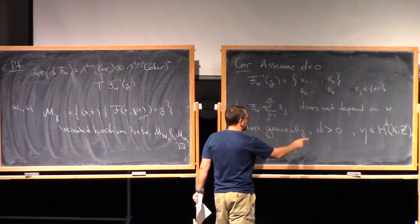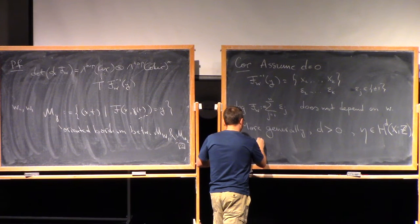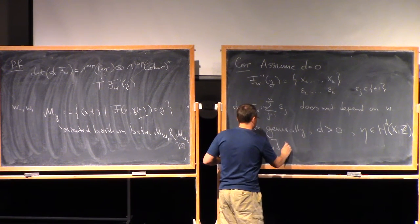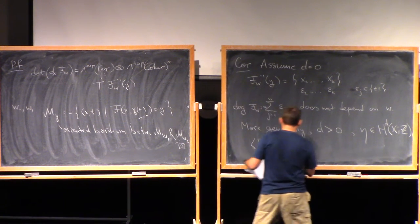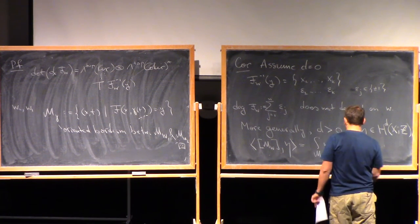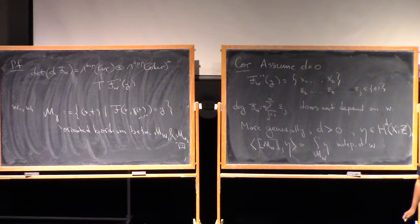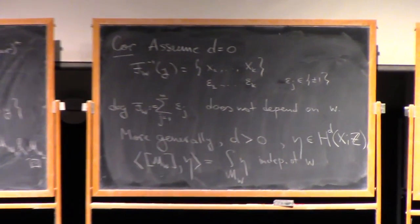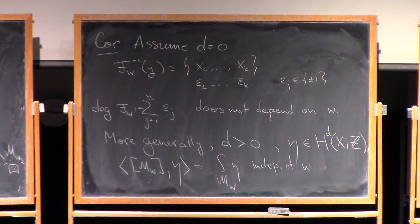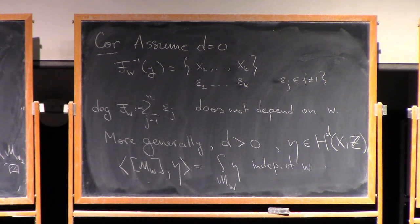Now we could integrate this eta over mw. So what I mean is we take the pairing of the fundamental class of w with eta. So if you think of eta as a Dramko homology class, this is just the integral over mw of eta, and this is also independent of w. And this sounds now pretty much similar to what I started with in the first lecture.